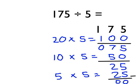That gets us to our answer. 25 take away 25 is 0. We look at this column and add it up: 20, add 10, add 5 takes us to 35. So 175 divided by 5 is 35. 5 goes into 175 thirty-five times.